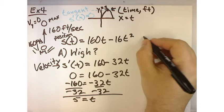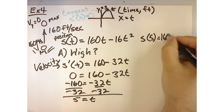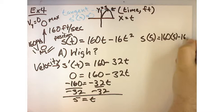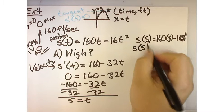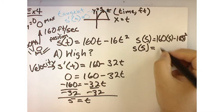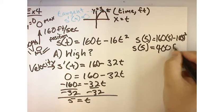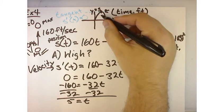To find the height, I need S of five. So, S of five. When I crank through that, I get 400.